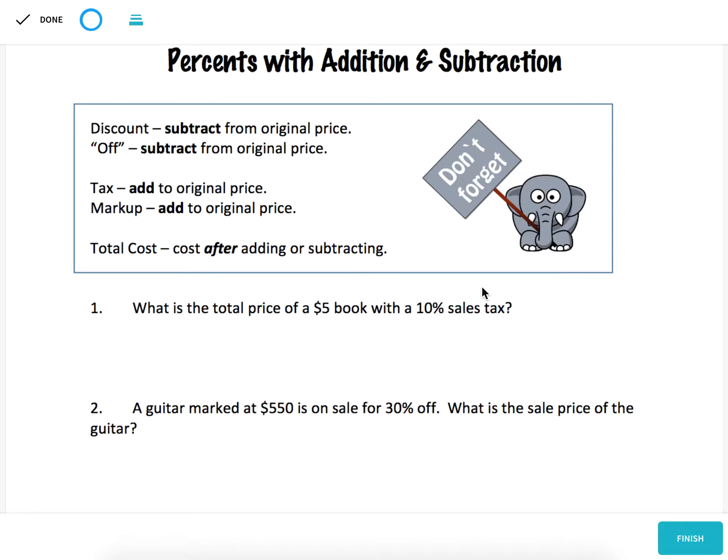Problem one says what is the total price of a $5 book with a 10% sales tax? Tax gets added on to the price of items. So 10% of $5, we can just move the decimal point over and that would be 50 cents. Since it's asking for the total price, not just the tax, we've got to add that tax on to the price of the book and we get our final answer of $5.50.